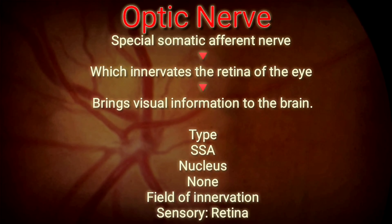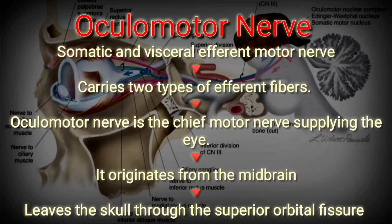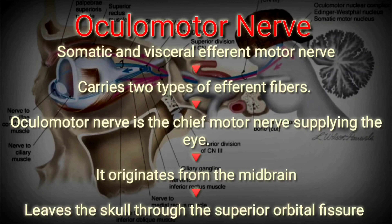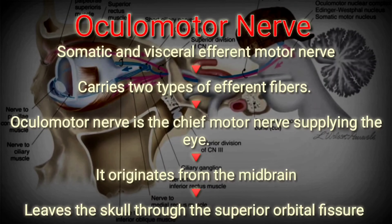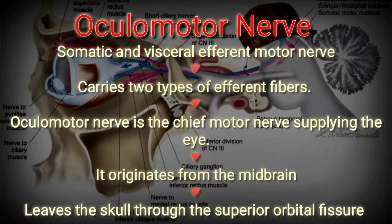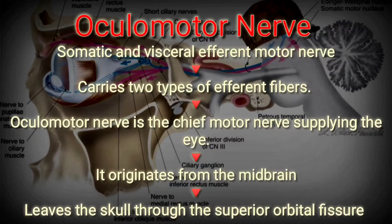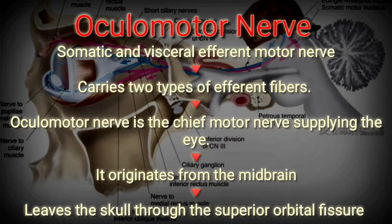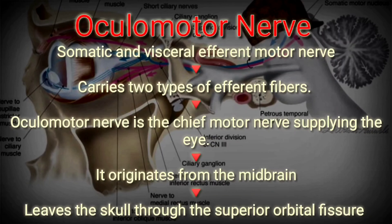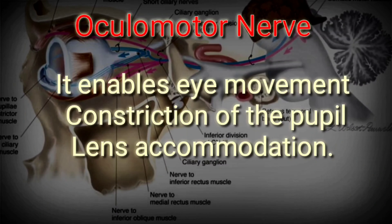The next one is the oculomotor nerve, cranial nerve 3. It is both a somatic and visceral efferent motor nerve, meaning it has two nuclei and carries two types of efferent fibers. As the name suggests, it is the chief motor nerve supplying the eyes. It originates from the midbrain and leaves the skull through the superior orbital fissure to enter the orbit, where it enables eye movement, constriction of the pupil, and lens accommodation.